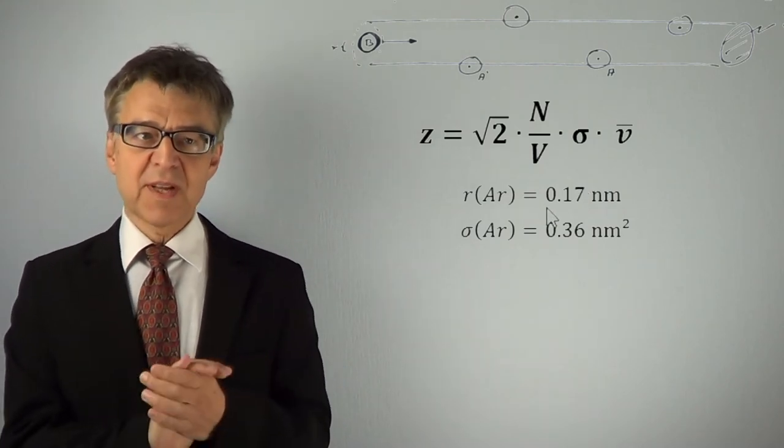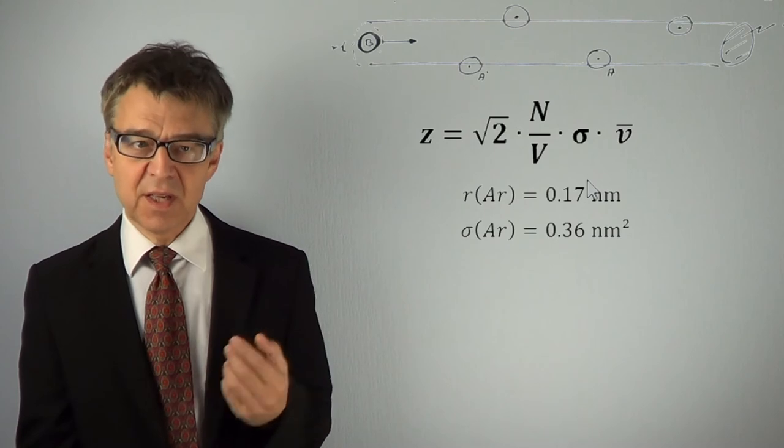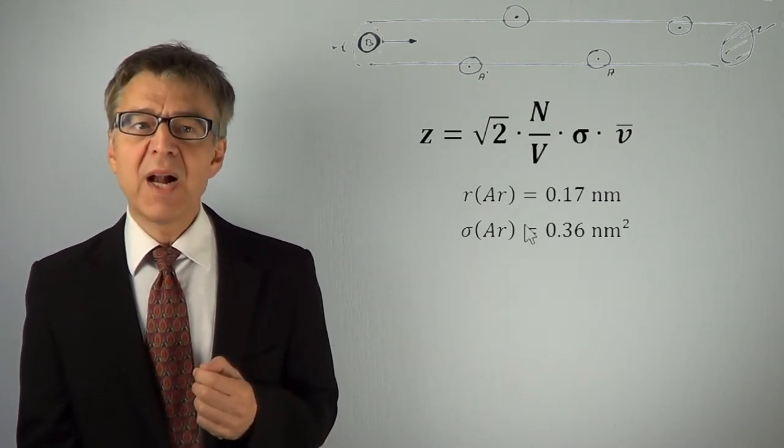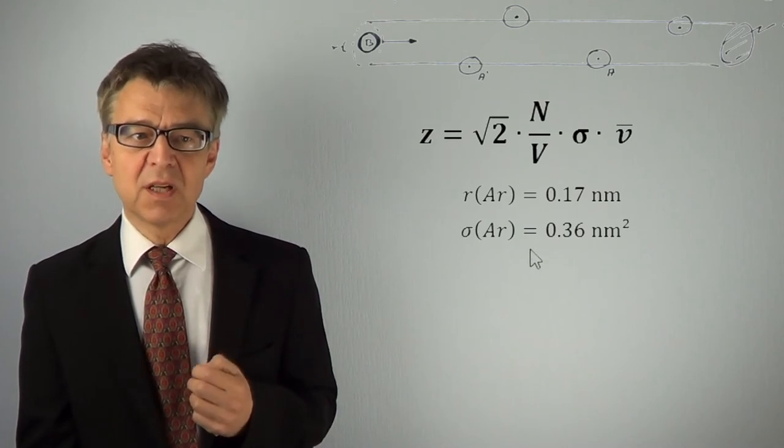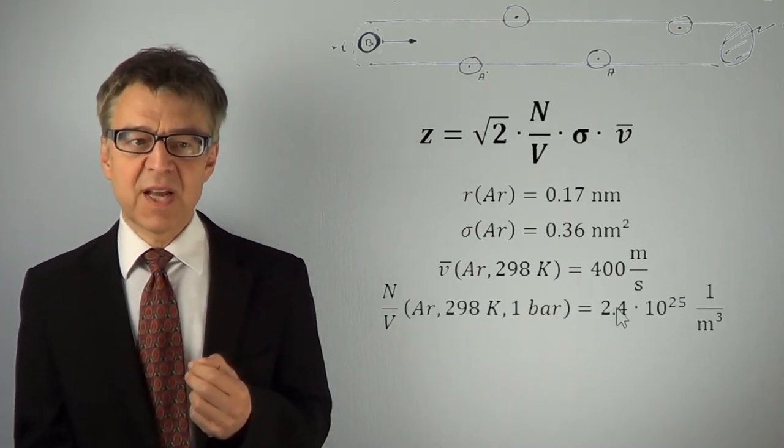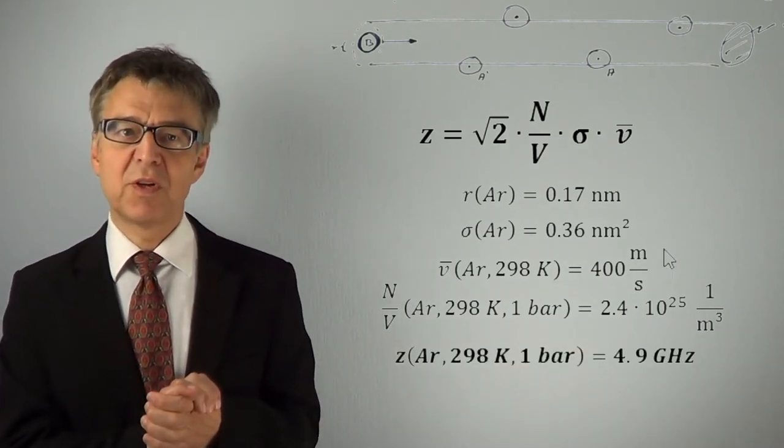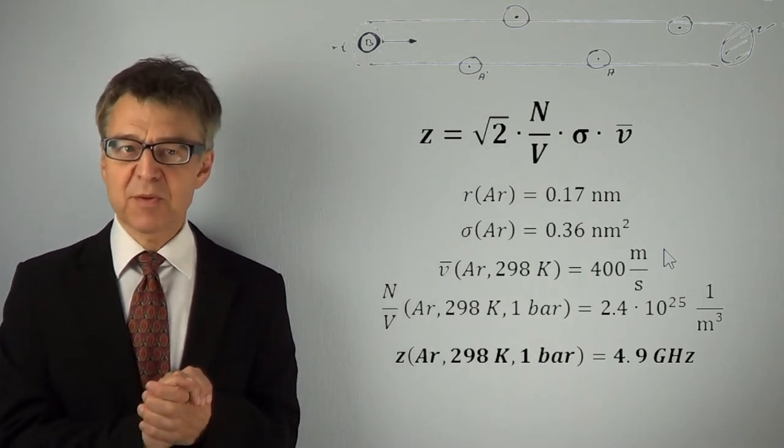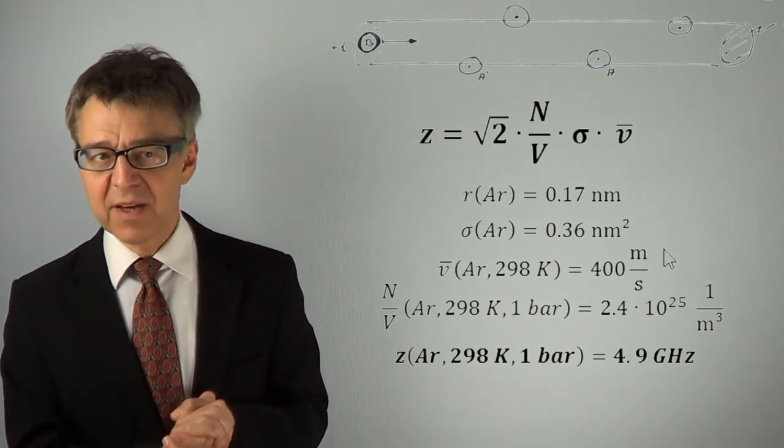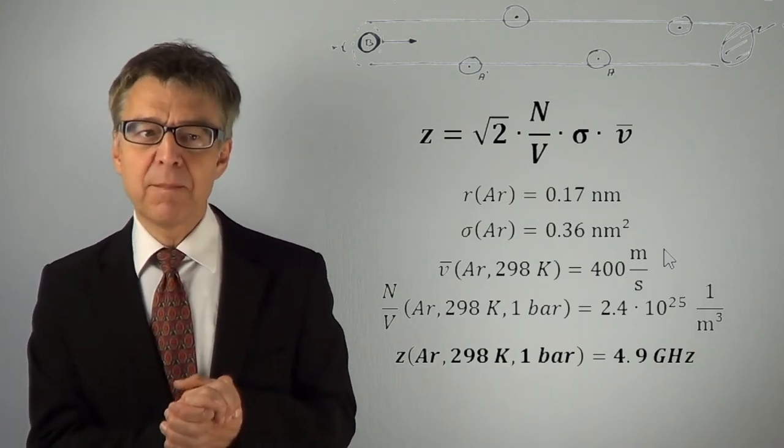This equation gives Z the collision frequency of a particle. The collision cross-section sigma can be estimated geometrically as pi times d squared. With the values for argon at standard condition, velocity 400 m per second, particle density 2.4 times 10 to the 25th particle per cubic meter, atomic radius of 0.17 nanometers, collision cross-section of 0.36 nanometers squared, results in a collision frequency of 4.9 GHz. Each particle collides in one second with 4.9 billion other particles.